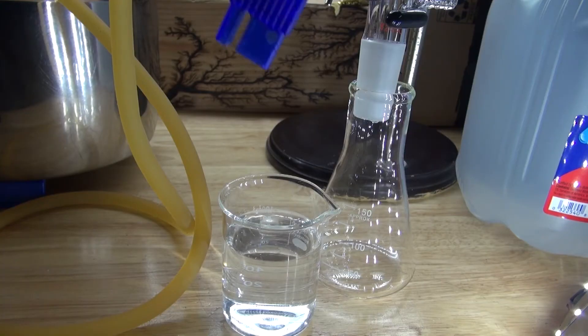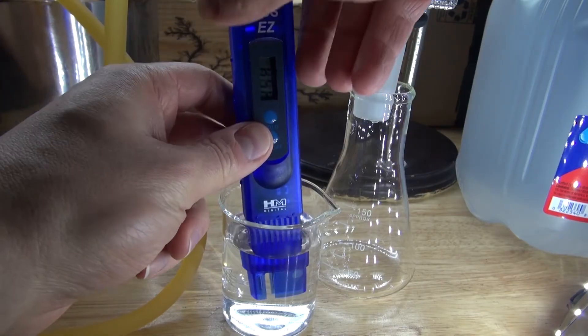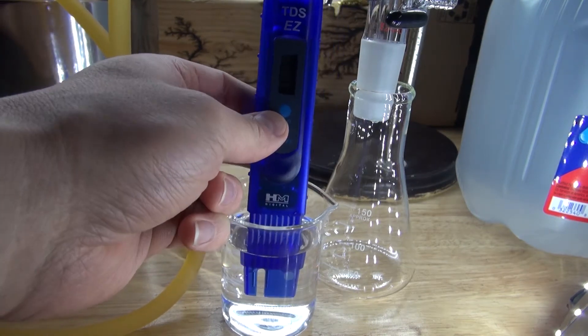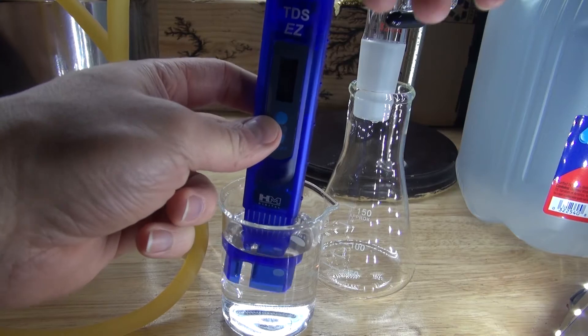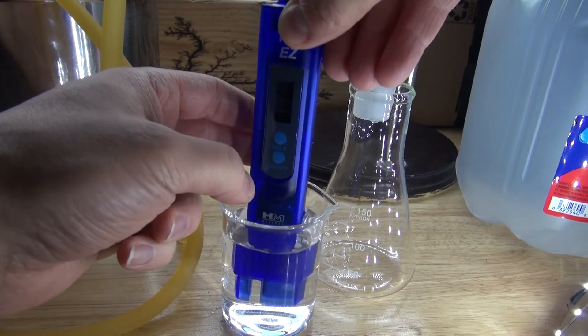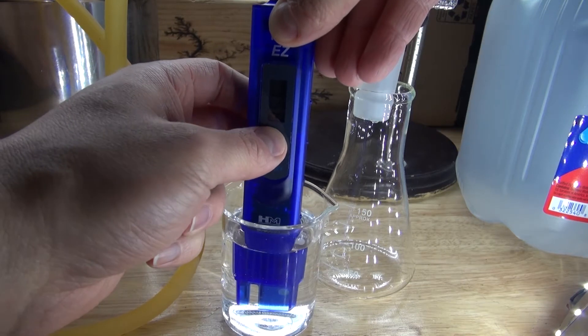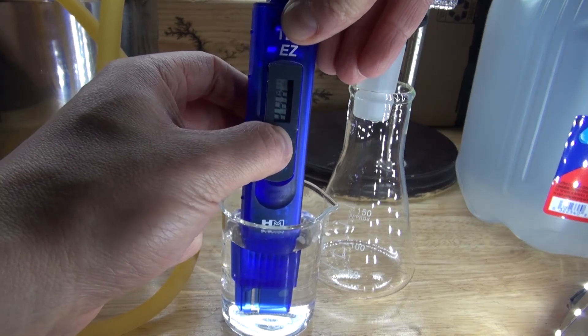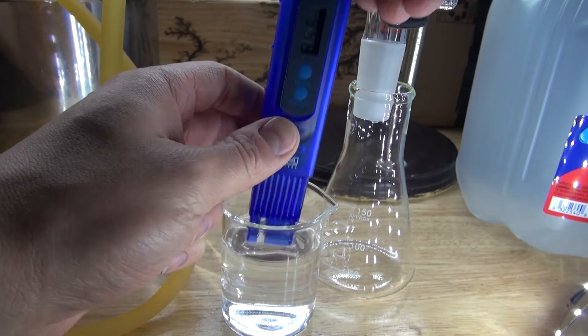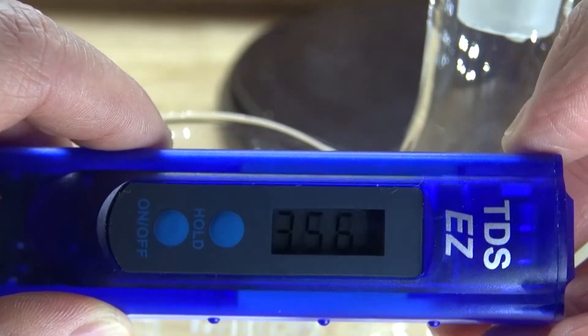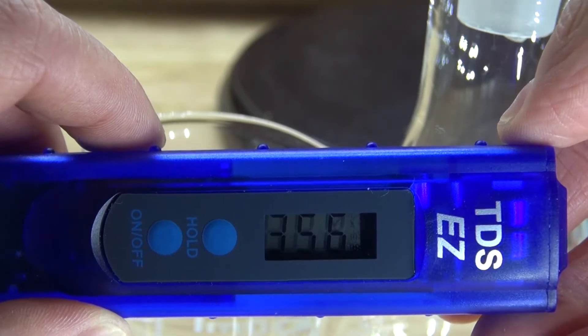I have right here in my beaker some tap water. Let's see how many total dissolved solids are in tap water. So far it looks pretty high. Wiggle it around a little bit. Press hold. And here are the results. As you can see, it's 356 parts per million. Wow, that's a lot of dissolved solids in tap water.